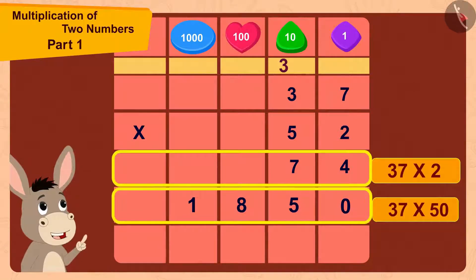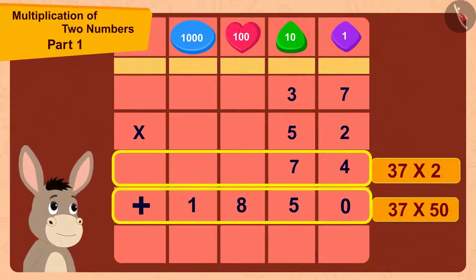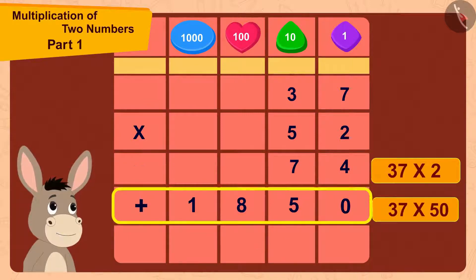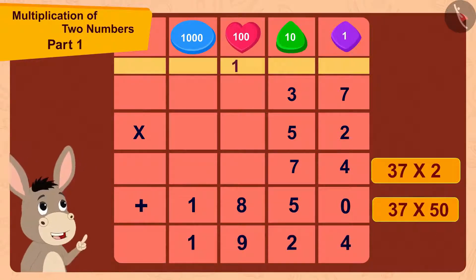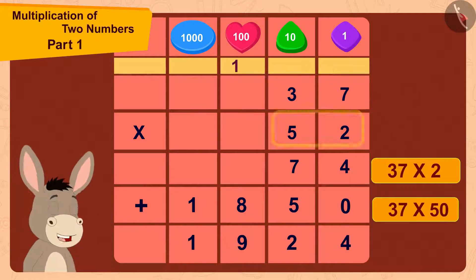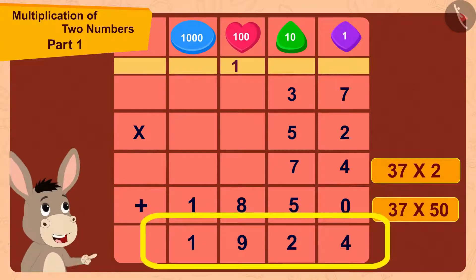Now finally I will add 74 and 1850. Oh wow, I got the code for this lock. The code for this lock could be 37 times 52 or 1924.